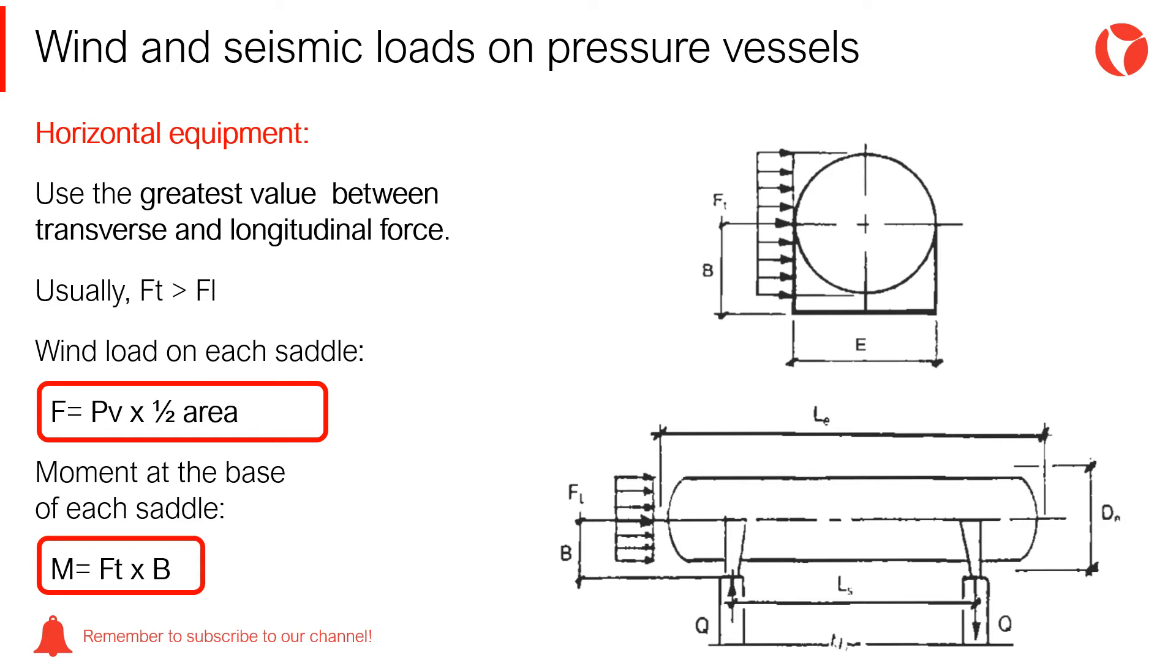The greatest value of each acting wind load needs to be determined for horizontal vessels. In this case, a transverse force and a longitudinal force could be acting on the vessel depending on the wind direction.